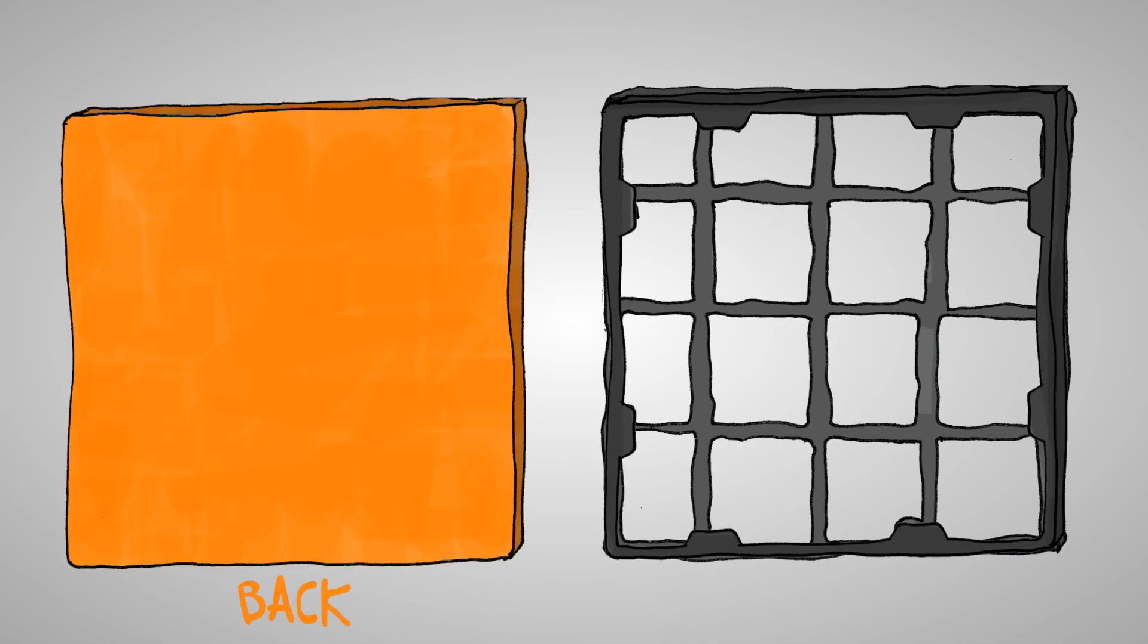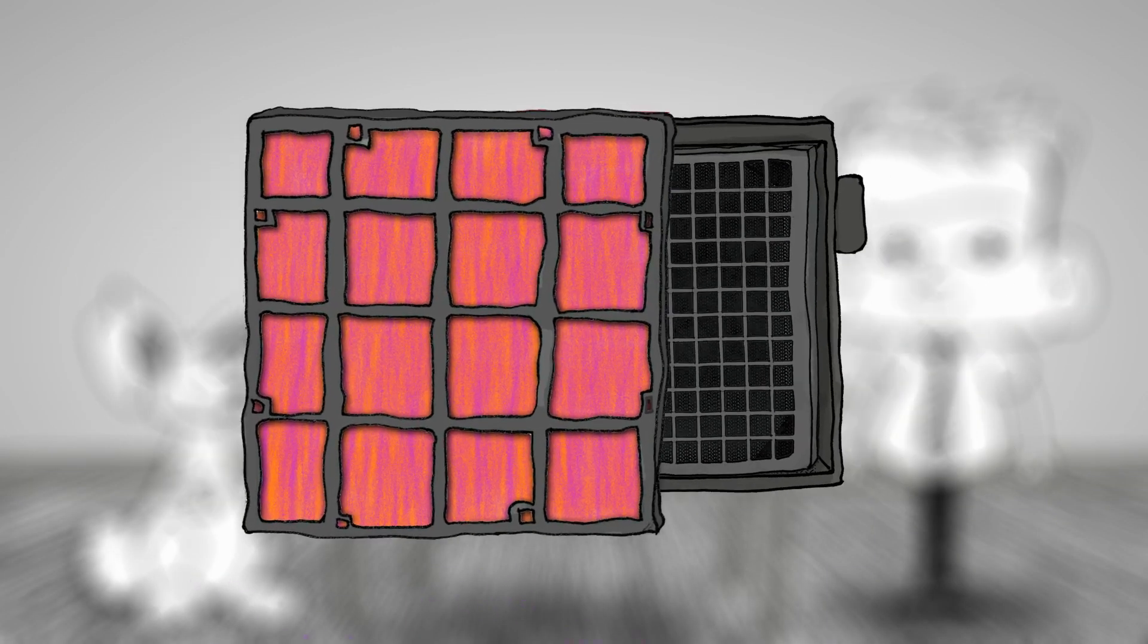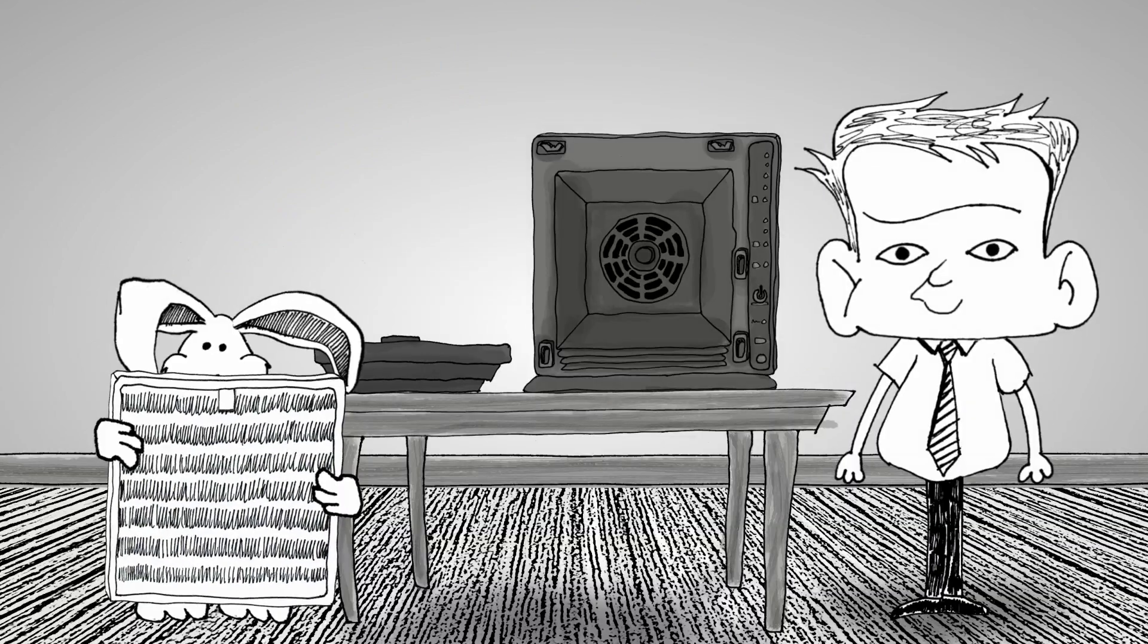Next is our BioGS HEPA filter. This filter can be identified with its accordion-like structure.